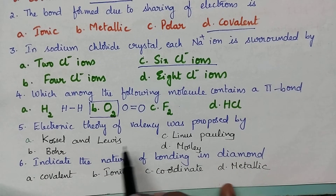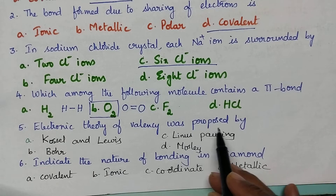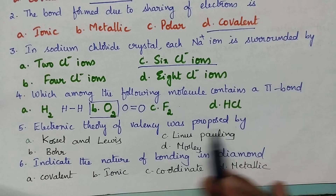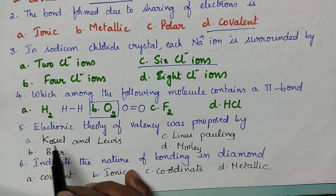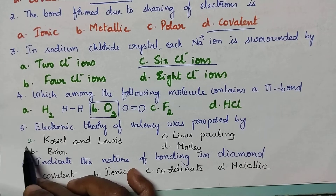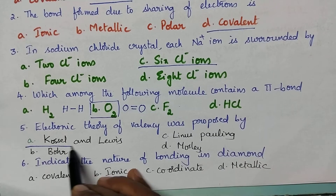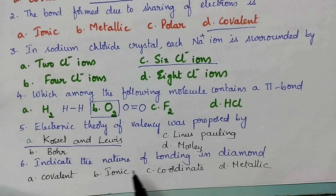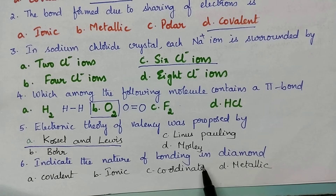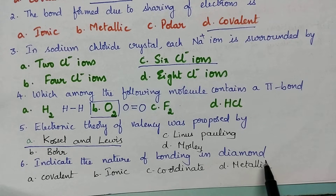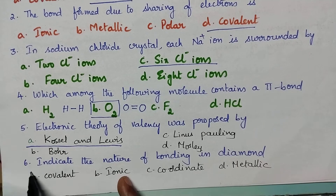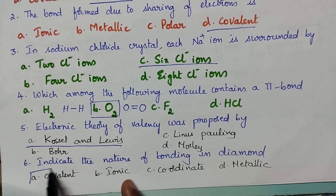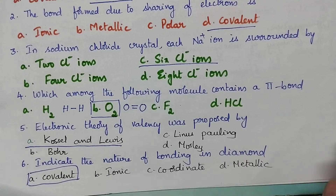The electronic theory of valency was proposed by Kossel and Lewis. Indicate the nature of bonding in diamond — diamond consists of carbon atoms, so a covalent bond is present in diamond.